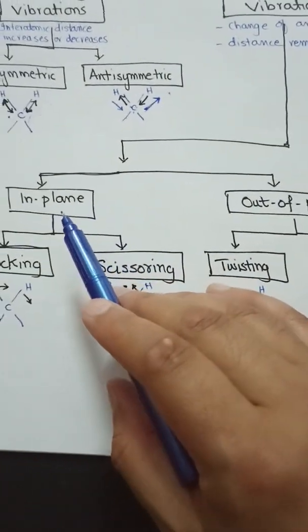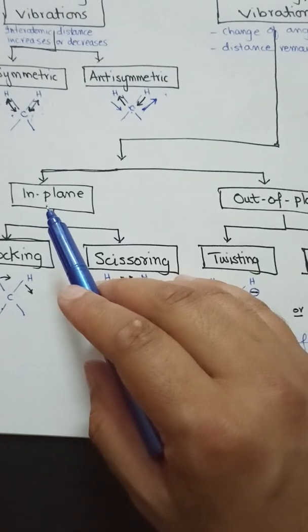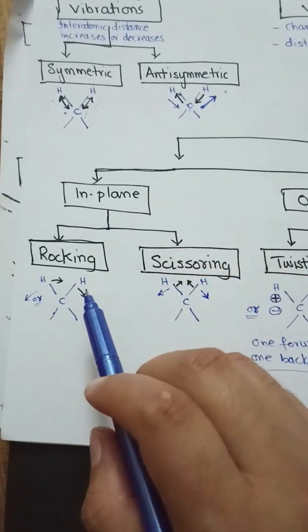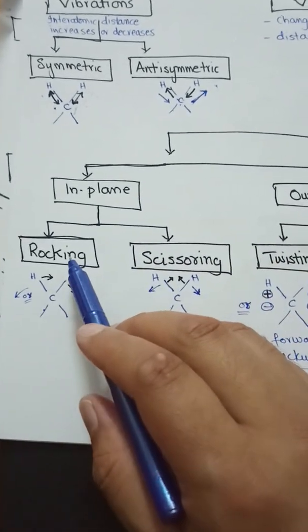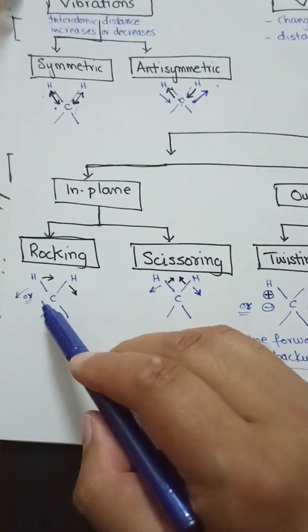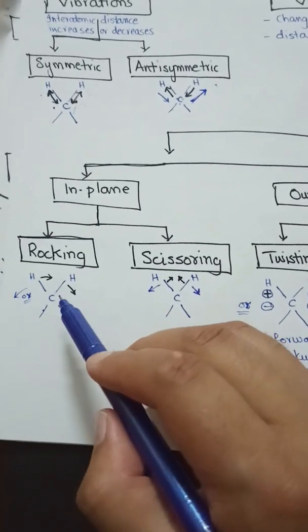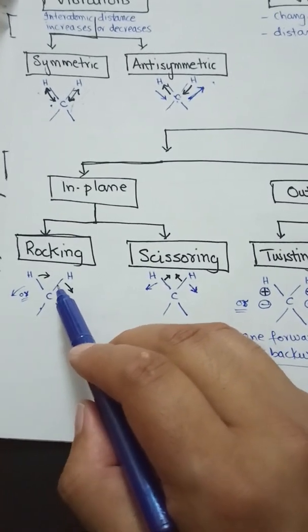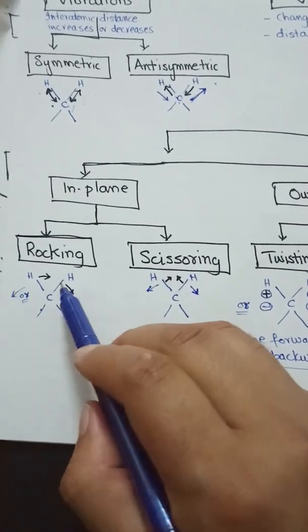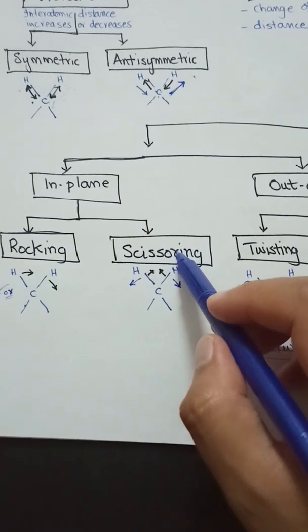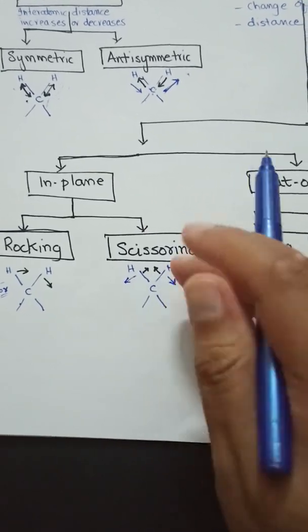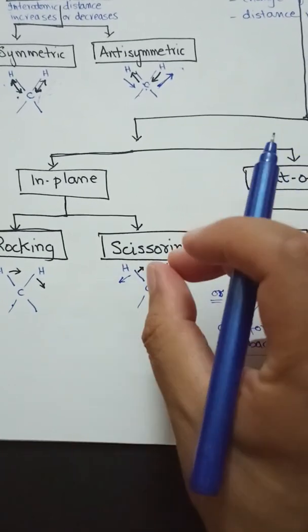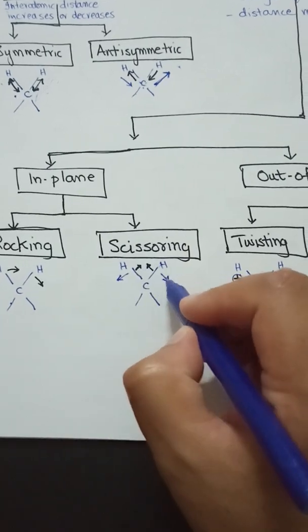Bending vibrations are of two types: in-plane and out-of-plane. In-plane bending vibrations are of two further types: rocking and scissoring. During rocking, these atoms — using the same three-atom example — move together in one direction and then move back. In scissoring, the angle changes and the bonds move like scissors, then come back.